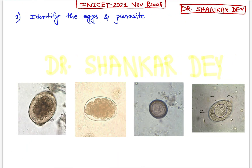The question was about parasitic eggs. Four images were given in today's exam and they asked to identify the individual eggs for 4 images. Let's identify the eggs one by one. The first one is nothing but Ascaris — egg of Ascaris. So number 1 is Ascaris.